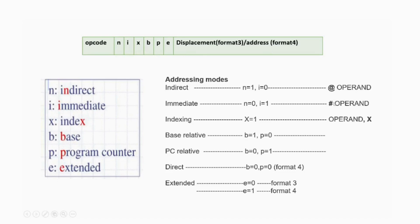To set these bits: for indirect addressing mode (@ prefix on operand), set n=1 and i=0. For immediate addressing mode (# prefix), set n=0 and i=1. For index addressing mode (operand,X), set x=1. For base-relative addressing, set b=1 and p=0. For PC-relative addressing, set b=0 and p=1. For Format 4 (direct addressing), both b and p are 0, e=0 for Format 3 and e=1 for Format 4.